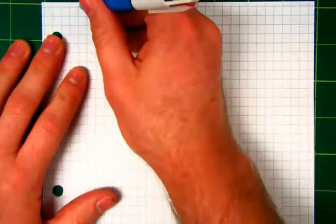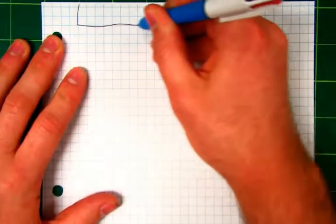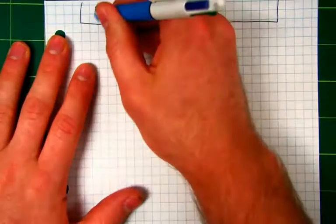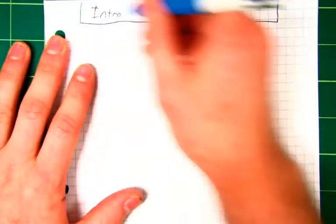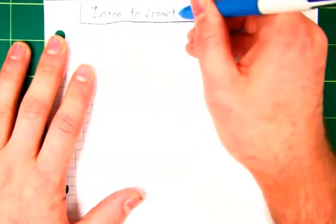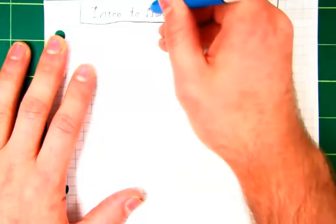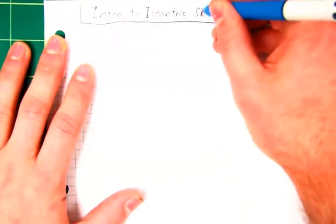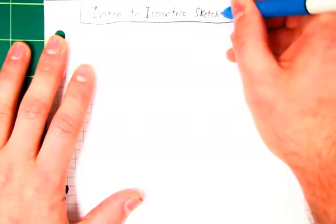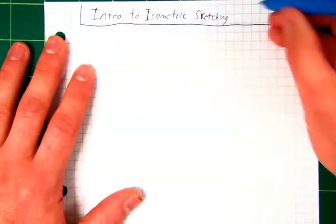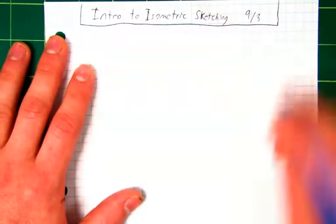So by now you've started a new section of your notebook. I'm going to go ahead and catch up with you. And what was the name of that section again? Intro to Isometric Sketching. I'm going to go ahead and make that a capital I. Isometric Sketching. And what's the date today? 9-3. Cool.